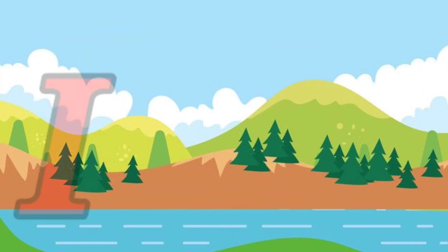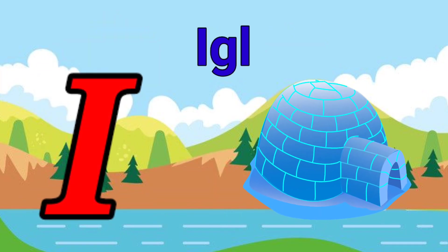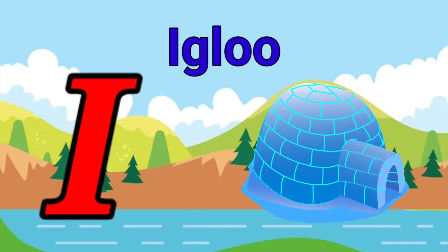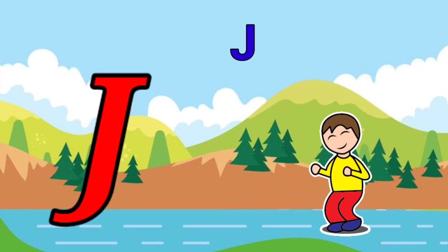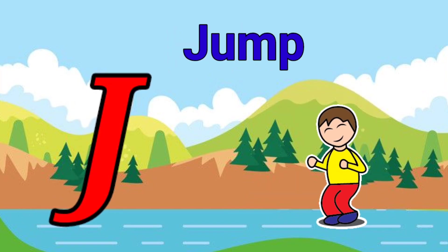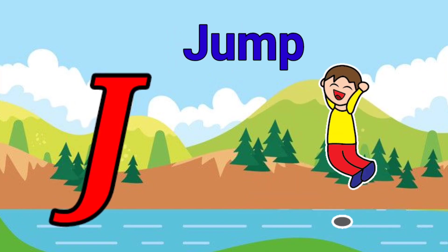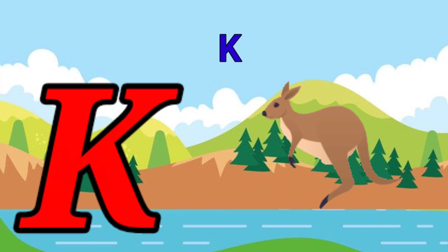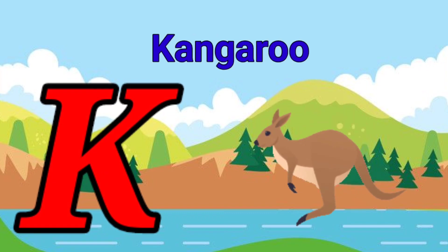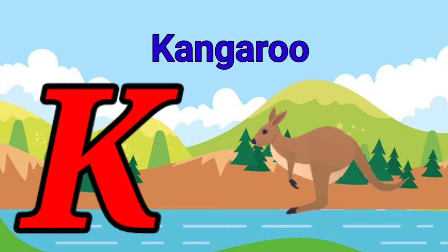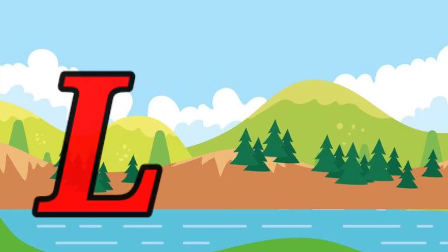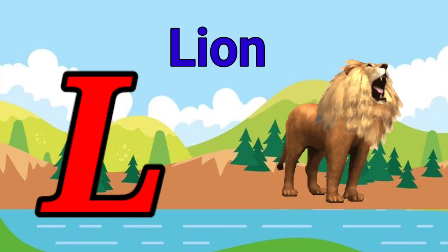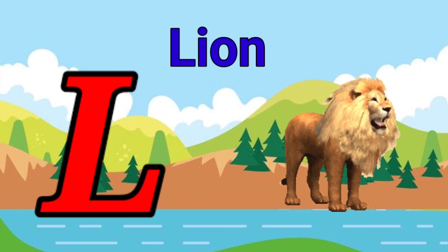I is for igloo, i-i-igloo. J is for jump, j-j-jump. K is for kangaroo, k-k-kangaroo. L is for lion, l-l-lion.